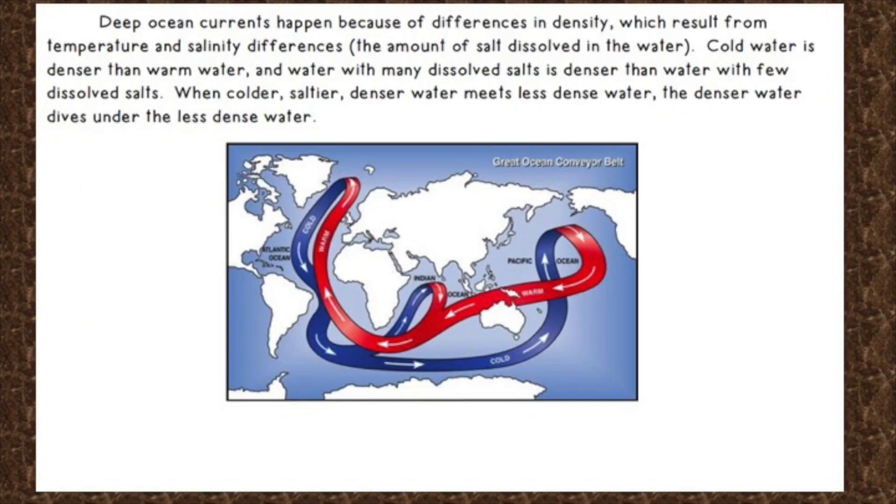Deep ocean currents happen because of differences in density, which result from temperature and salinity differences. Salinity means the amount of salt dissolved in the water. Cold water is denser than warm water. And water with many dissolved salts is denser than water with fewer dissolved salts. When colder, saltier, denser water meets less dense water, the denser water dives under the less dense water.